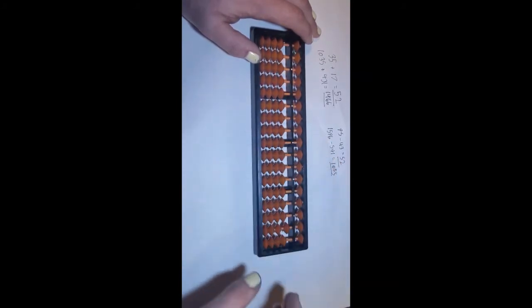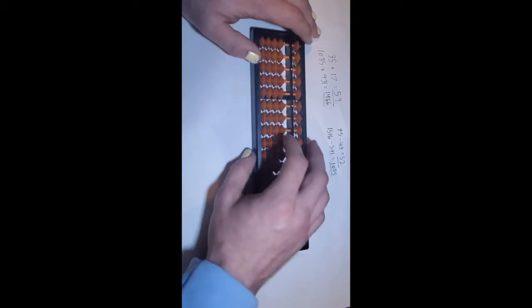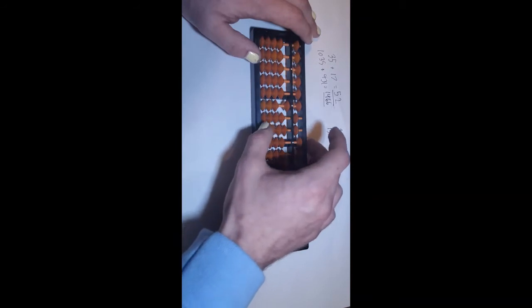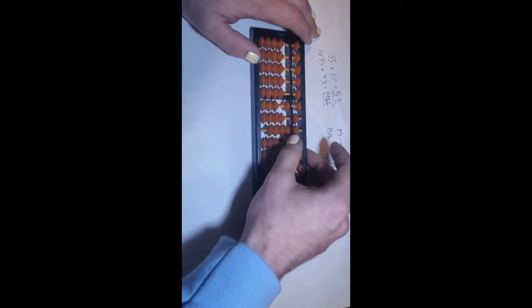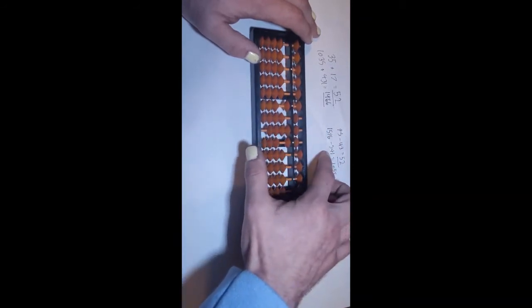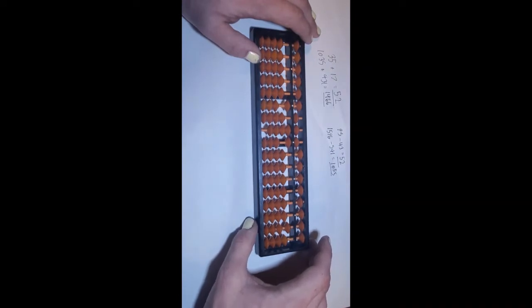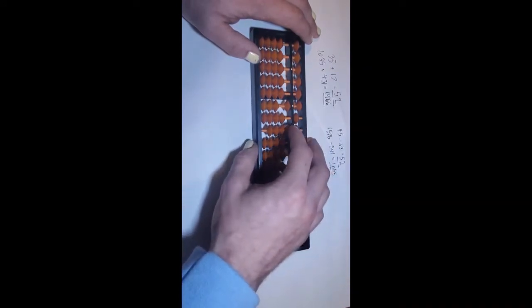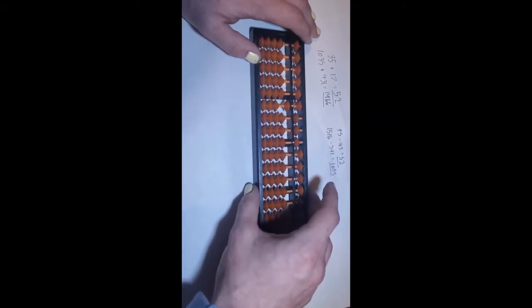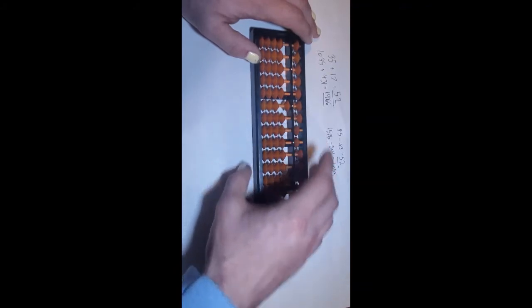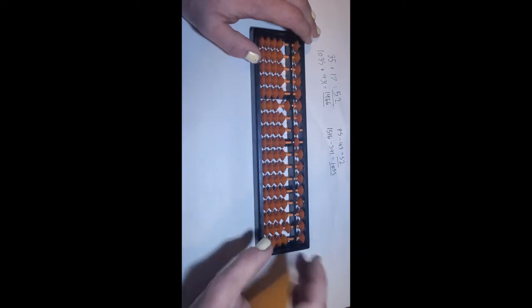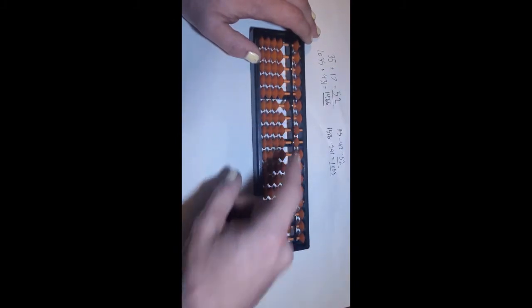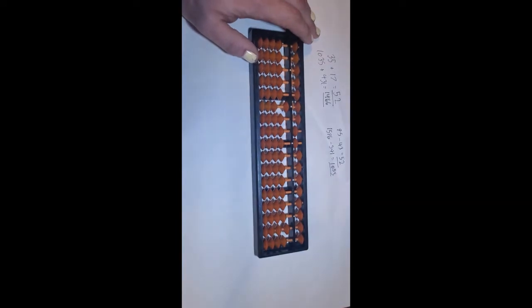Okay, so let's do a little bit of a bigger number. Let's do 1,596 minus 541. So to do this, we take 1 away in the ones place. We take 4 away in the tens place. And we take 5 away in the hundreds place. And we're left with our answer of 1,055. And that's how you do subtraction.